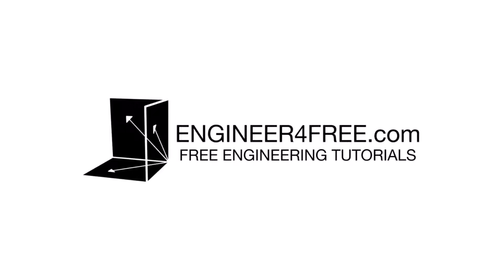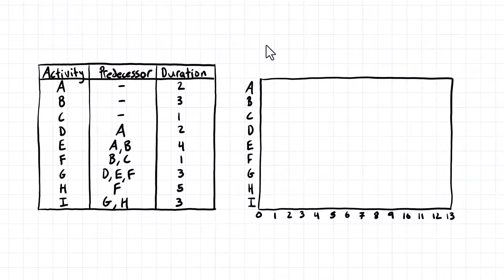Welcome back. In this video, we're going over another example on how to draw a Gantt chart when you're given a table of dependencies. In this table, we have all of our activities, A through I, the predecessor relationships showing which activities have to finish before others can start, and the duration in days.